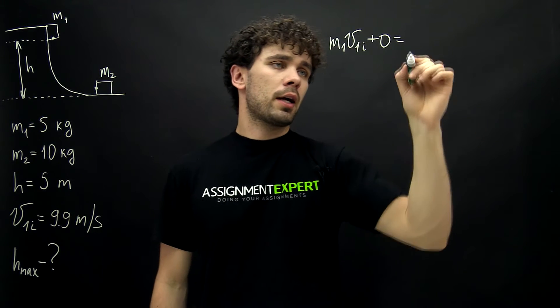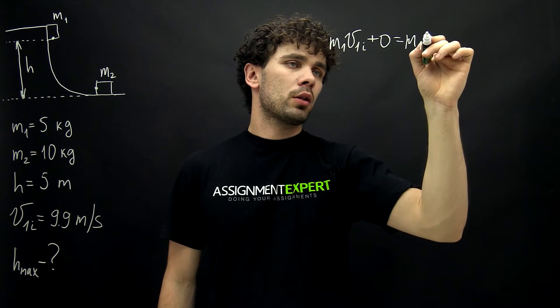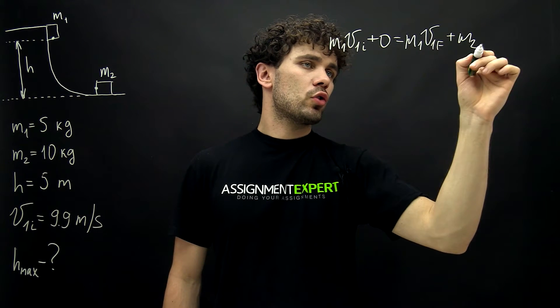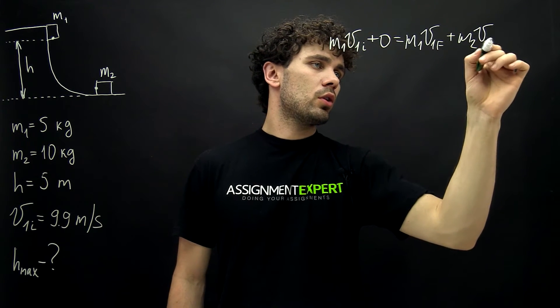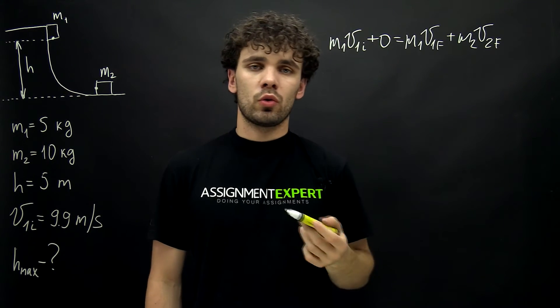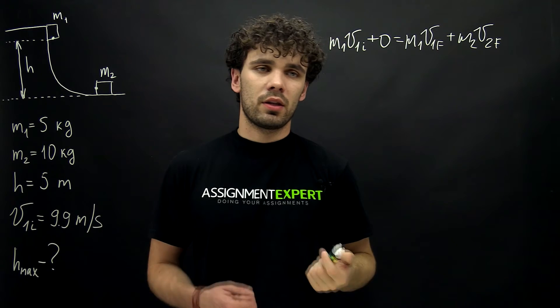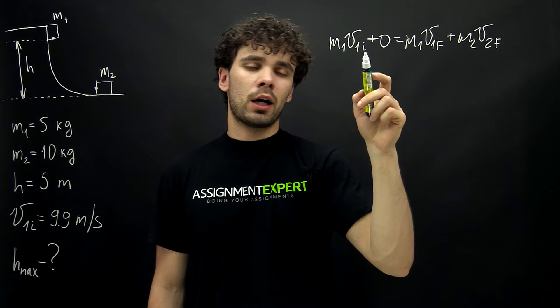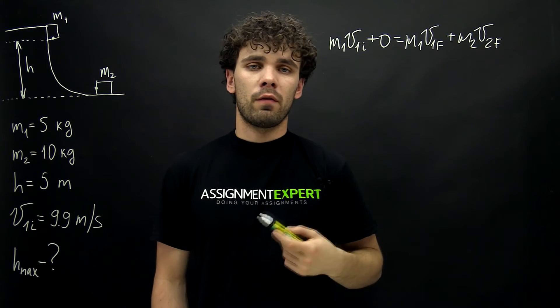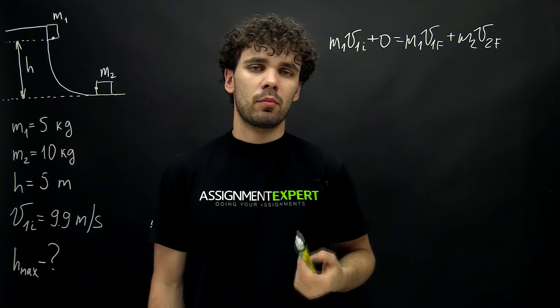And on the right side we have m1 times v1 final plus m2 times v2 final. So here we have m1 and m2 are the masses of the first and the second block. And v1i is the initial speed of the first block. And v1f, v2f are the final speed of the first and the second block.